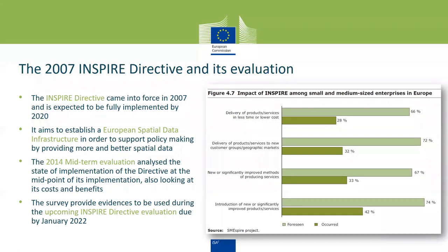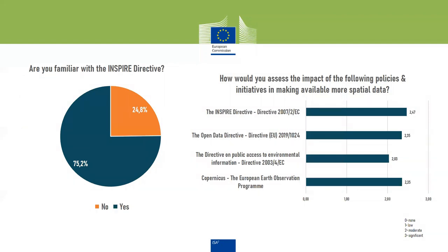Let's have a few more seconds for votes. We'll close the polling. Most of you voted for INSPIRE as the initiative with the most impact in making available more spatial data, then the Open Data Directive, then Copernicus. Most of you are familiar with the INSPIRE Directive, and most agree that its impact on making more spatial data available is moderate. Glenn, please share the survey results.